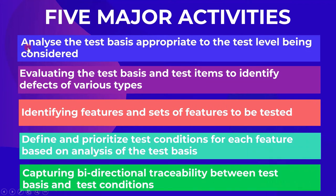The first activity is to analyze the test basis appropriate to the test level being considered. The second activity is evaluating the test basis and test items to identify defects of various types. The third activity is identifying features and sets of features to be tested. The fourth activity is to define and prioritize test conditions for each feature based on analysis of the test basis. The fifth activity is capturing bidirectional traceability between test basis and test conditions. Now let's understand each of these activities in detail.